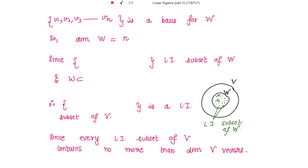Since {v1, v2, ..., vn} is the basis, it is a linearly independent subset of W, and W is a subset of V. This is your vector space V, W is a subspace of V containing v1 through vn as its basis. Because these are a linearly independent subset of W and W is itself contained in V, these are also a linearly independent subset of V.